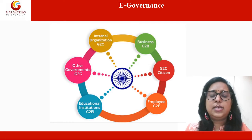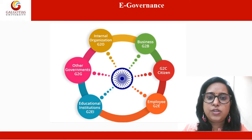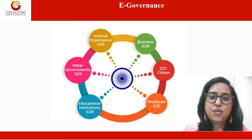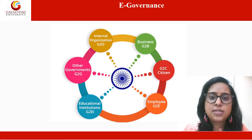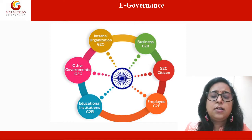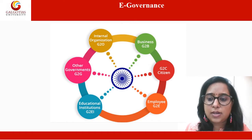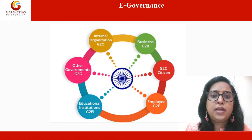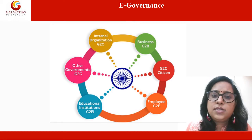What basically is e-governance? E-governance can be defined as the application of information and communication technology for providing government services, exchange of information, transactions, and integration of previously existing services and information portals. The 'e' in e-governance stands for electronic. The Council of Europe referred to e-governance as the use of electronic technologies in three areas of public action: relations between public authorities and civil society, functioning of public authorities at all stages of the democratic process, and the provision of public services.